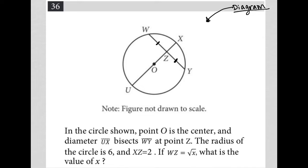The radius of the circle is 6. Okay, so that's also a good thing to know. So the distance between O and U is 6. The distance between X and O is also 6.